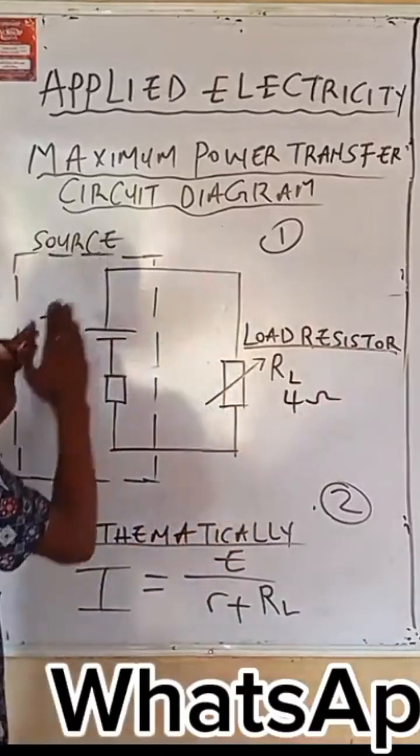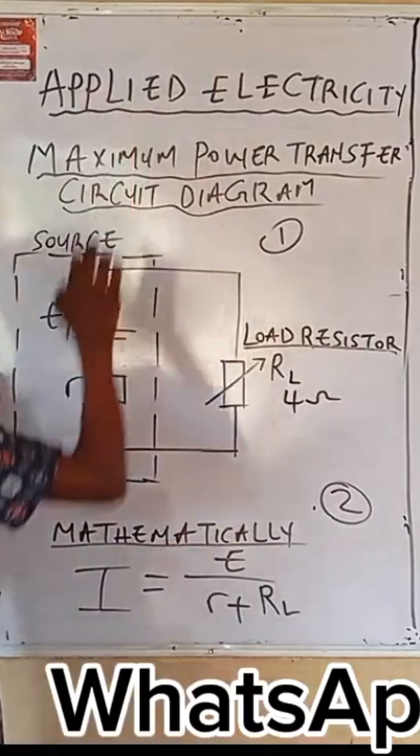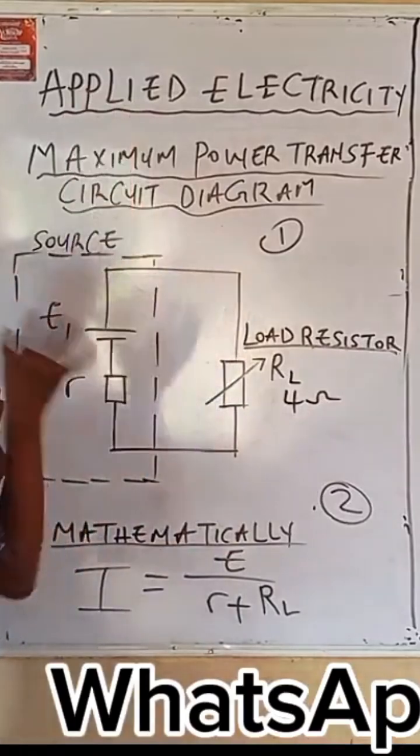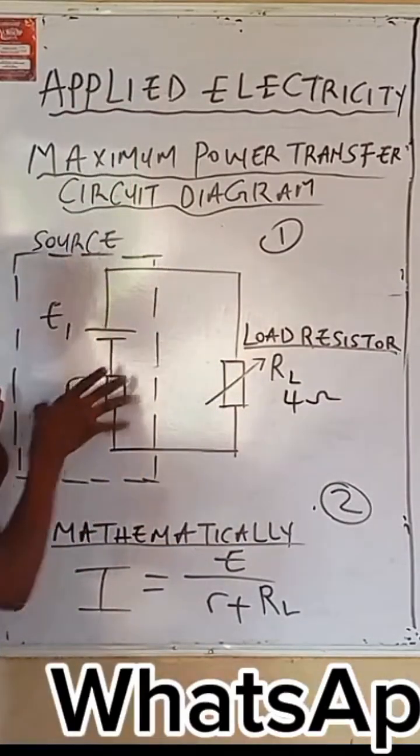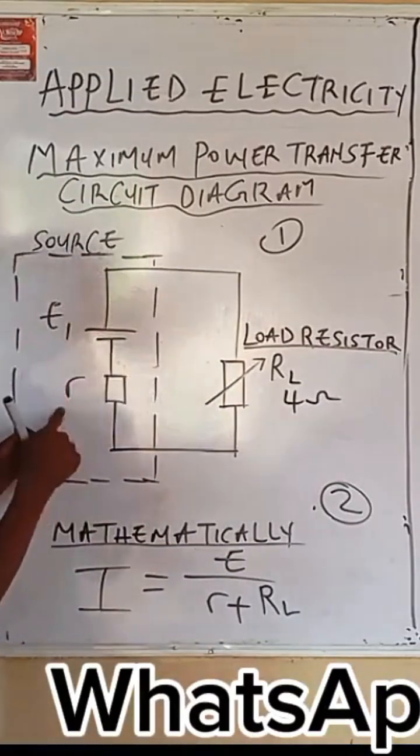In other words, for the power of your source to be maximum, when you are given a source and need to find the maximum power of that source, the value of R to use must equal the load resistance.